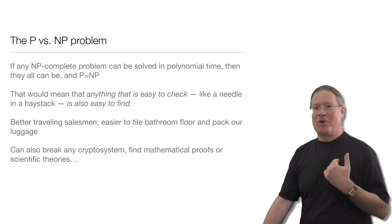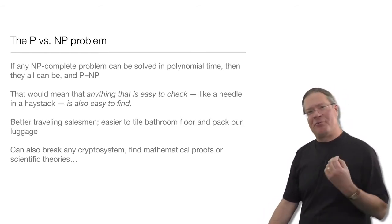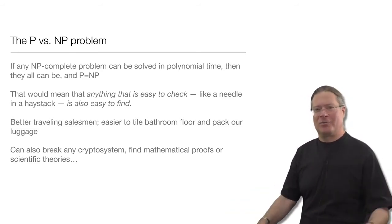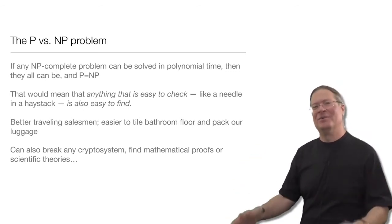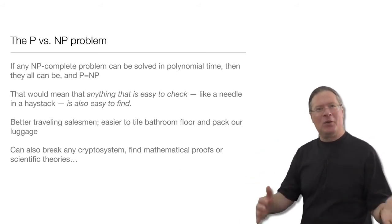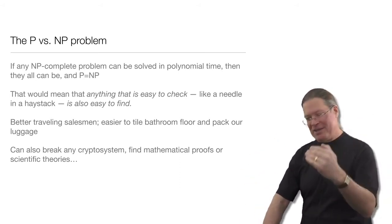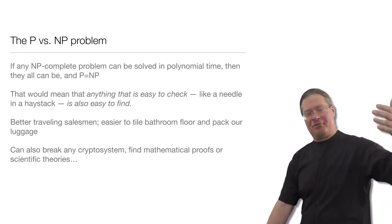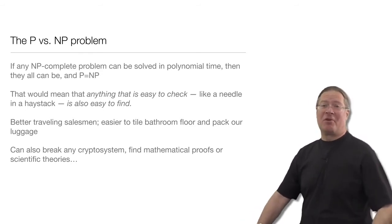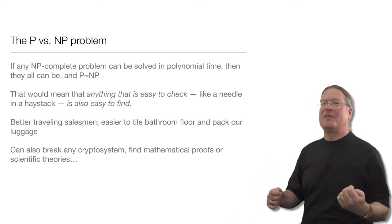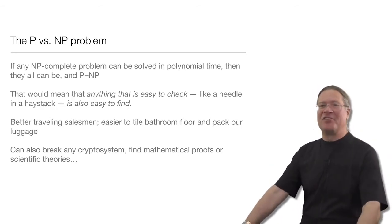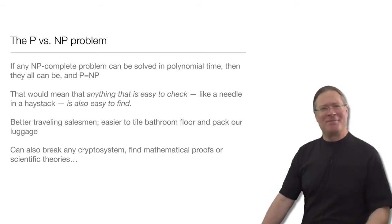Something near and dear to my heart are mathematical proofs. The whole point of a formal mathematical proof written in a formal axiomatic framework is that they can be checked — we can check step by step whether each step follows from the previous steps according to our axioms. So if proofs can be checked, and if P and NP are the same, they could also be found easily. We wouldn't have to apply the kind of blood, sweat, and tears that people like me think we need to do.